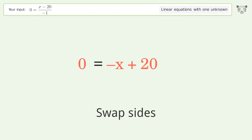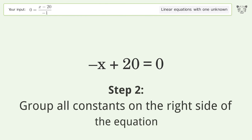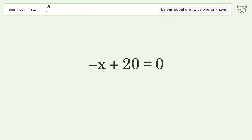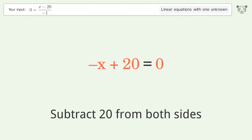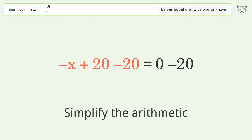Swap sides. Group all constants on the right side of the equation — subtract 20 from both sides. Simplify the arithmetic.